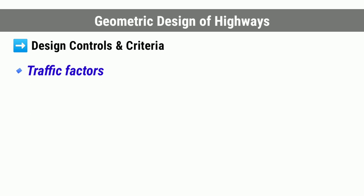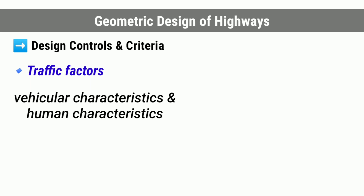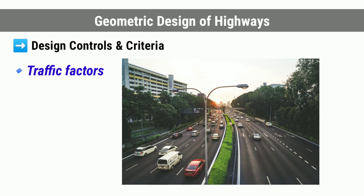Next, we see about the traffic factors. The traffic factors associated with the geometric design of roads are the vehicular characteristics and human characteristics of road users. The different vehicle classes such as passenger cars, buses, trucks, motorcycles, and various other types of non-motorized vehicles have different speed and acceleration characteristics, apart from having different dimensions and weights. The important human factors which affect traffic behavior include the physical, mental, and psychological factors of drivers and pedestrians.